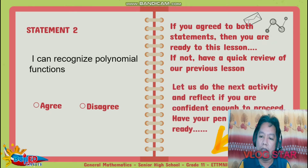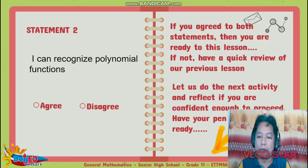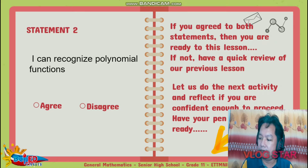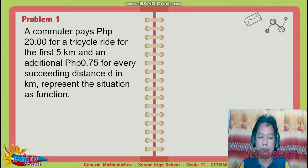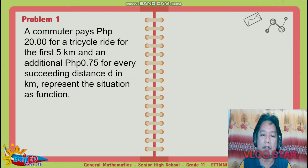Let us do the next activity and reflect if you are confident enough to proceed. Have your pen and paper ready. Problem number one: a commuter pays 20 pesos for a tricycle ride for the first 5 kilometers and an additional 0.75 pesos for every succeeding distance in kilometers.